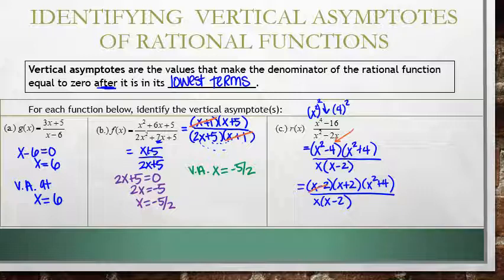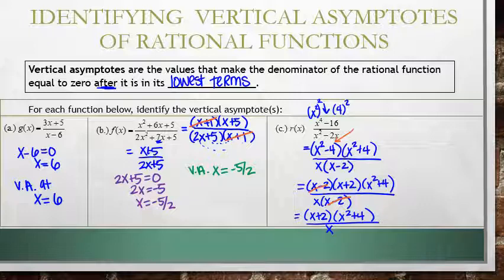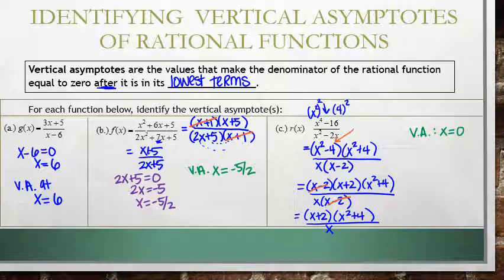We can cancel the x minus 2 factors, leaving x plus 2 times x squared plus 4, all over x. Now the function is in its lowest terms. Looking at the simplified denominator, it equals zero only when x equals zero, so there is a vertical asymptote at x equals 0.